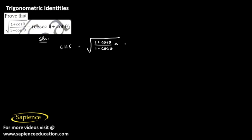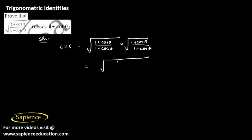We will multiply this term with (1 plus cos theta) and divide it with (1 plus cos theta). So we will get square root of (1 plus cos theta) into (1 plus cos theta), which is (1 plus cos theta) whole square, divided by (1 minus cos theta) into (1 plus cos theta), which is (1 minus cos squared theta).